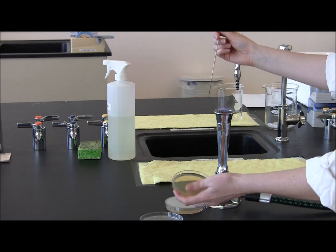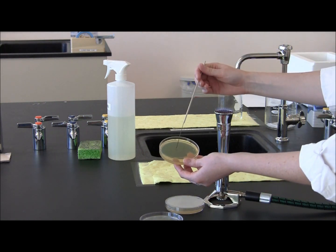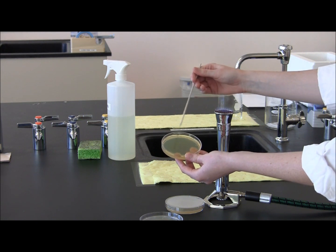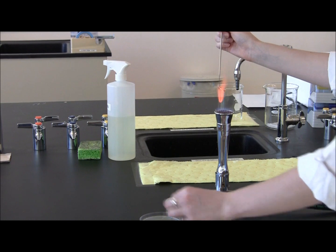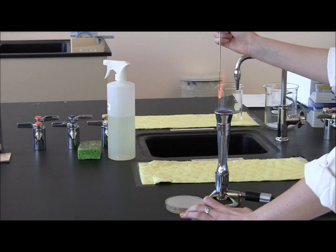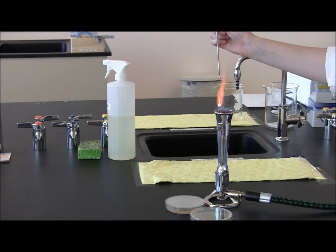Now you are doing your last isolation streak, which should not touch any of the other quadrants you have streaked on the plate. Flame the loop when you have finished, let it cool, and then put it back in the drawer.